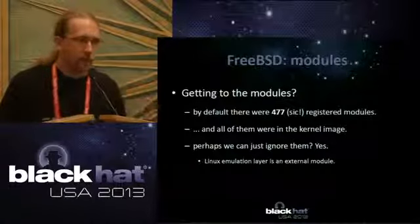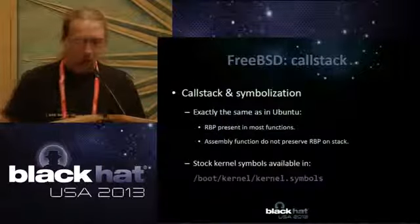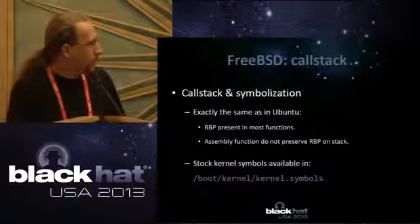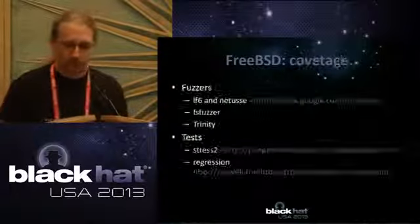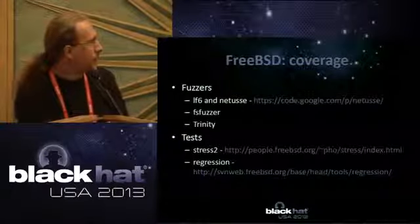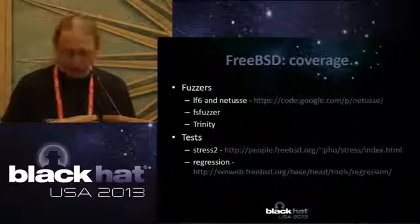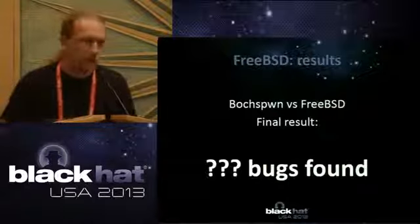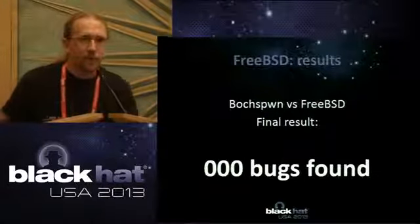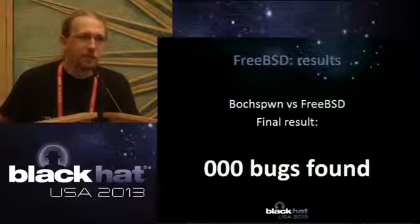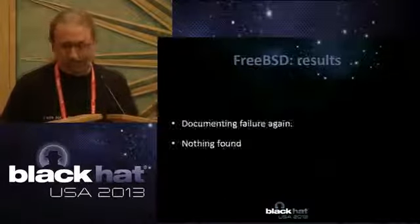Call stack and symbolization is the same as Linux. One nice thing: FreeBSD has symbols for the kernel in the default installation — you don't have to look for them. For coverage we used LTP, Netuse, fsfuzz, Trinity ports from Linux, Stress 2, and regression tests for FreeBSD. Results: again nothing found. We're pretty sad. This is why we thanked Microsoft — they actually have bugs we can find. FreeBSD also has copying functions that must be used — five of them — and this is a known bug class on BSD that has been audited before. One false positive to mention: in the kernel select function, selectcheckbadfd gets some bits then gets the same bits again — it's a double fetch but due to how it's used it's not exploitable.